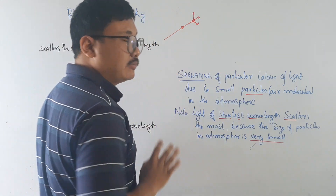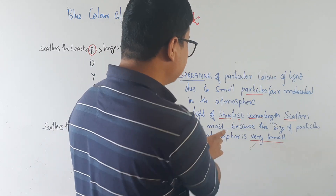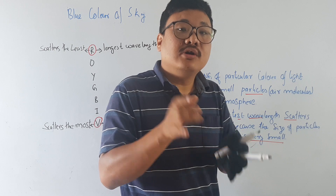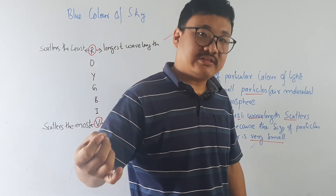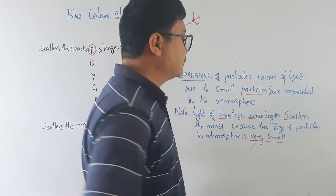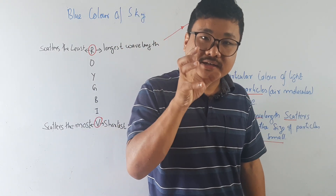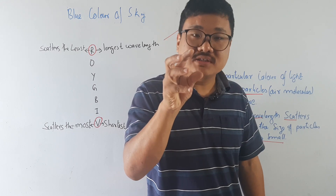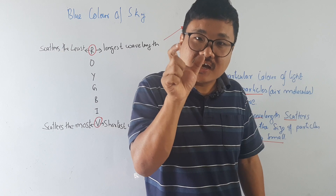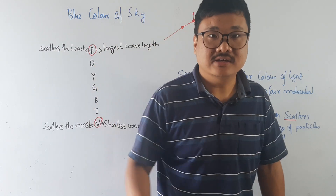One important thing: the light of shortest wavelength scatters the most. The light with the shortest wavelength scatters the most. Because the size of the particles in the atmosphere is very small — air molecules are very tiny. So the light with the shorter wavelength spreads more.